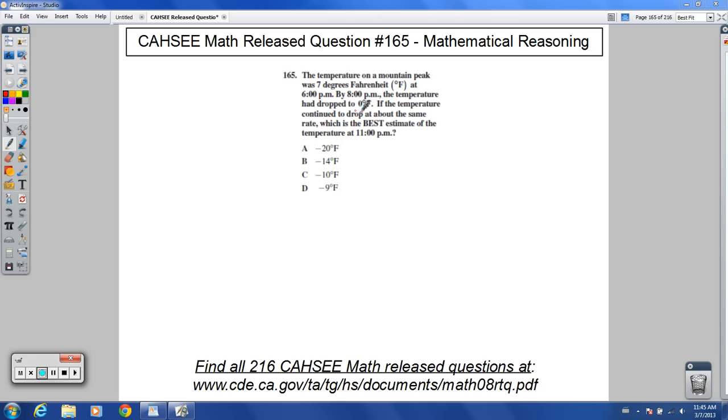If the temperature continued to drop at about the same rate, which is the best estimate of the temperature at 11 p.m.? So basically we need to figure out how many degrees it's dropping each hour and then keep it going at that same rate.